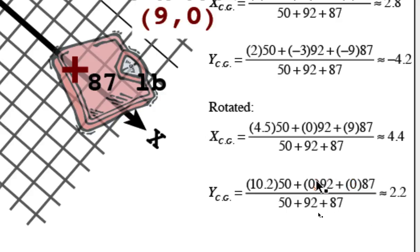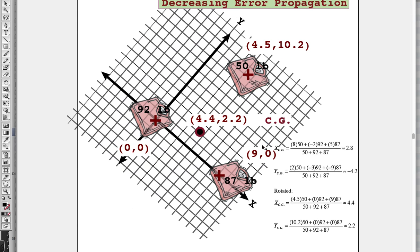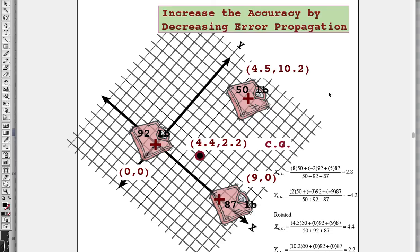So I think we just learned a way that we can increase the accuracy—the knowledge of where the center of gravity lies—by decreasing our error propagation, simply by putting on a rotated coordinate system where two of the weights are along one grid line, and then putting our axis, the origin, at one of the weight values. So I hope that helps you—little hints.